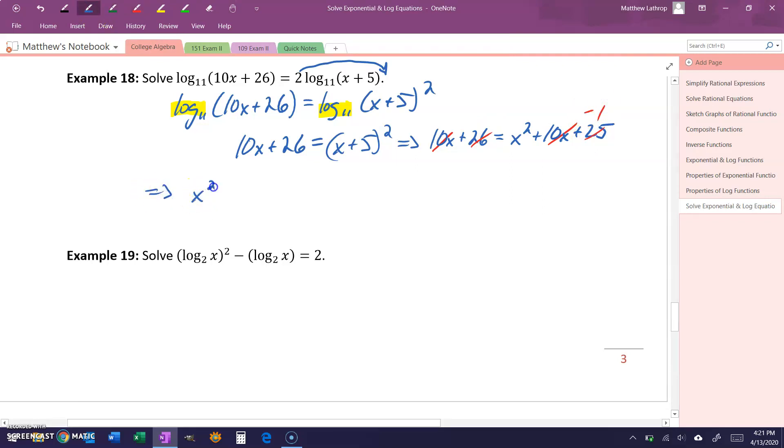So we get x squared minus 1 is equal to 0, or x plus 1 times x minus 1 is equal to 0, leaving us with two solutions: x is equal to 1, or x is equal to negative 1.